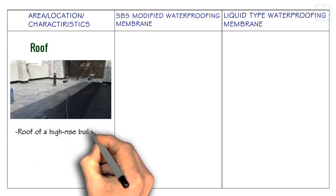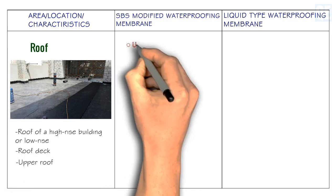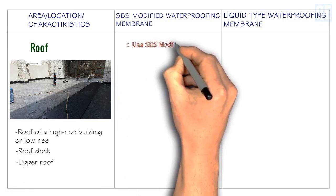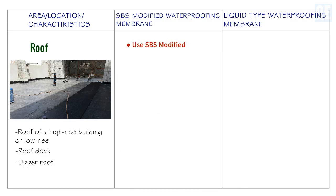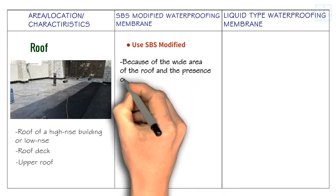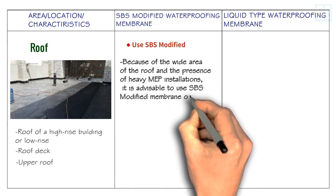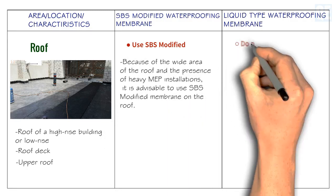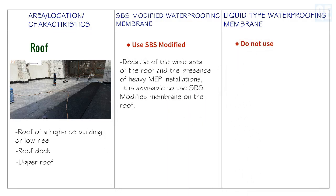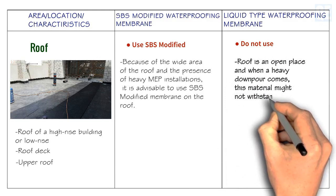For the roof of a high-rise or low-rise building, including the roof deck and upper roof, use SBS modified waterproofing membrane. Because of the wide area of the roof and the presence of heavy MEP installations, SBS modified membrane is advisable.